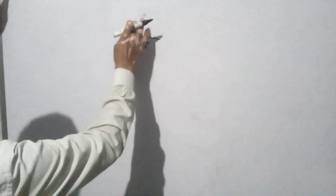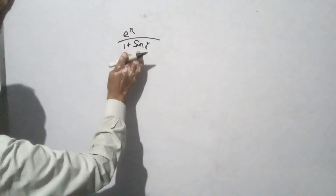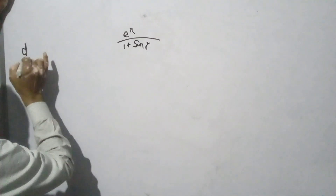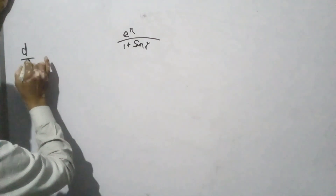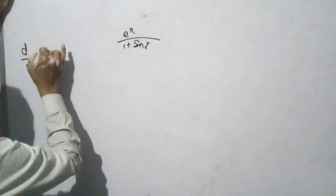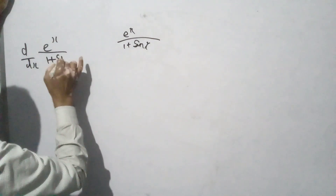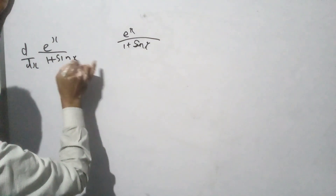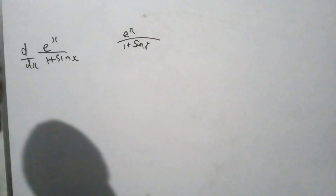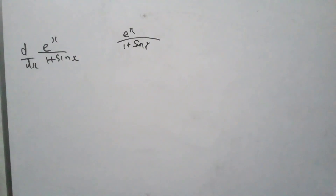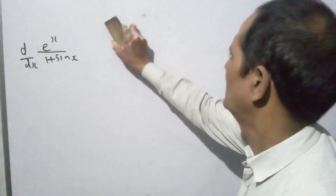The given function is e to the power x upon 1 plus sin x. Differentiate: d by dx of e to the power x over 1 plus sin x. This is the Quotient formula.